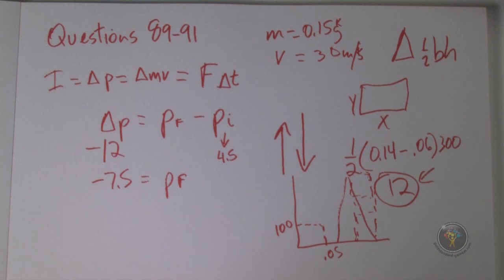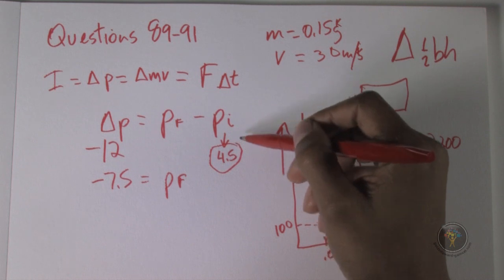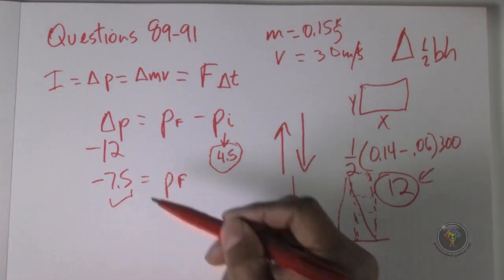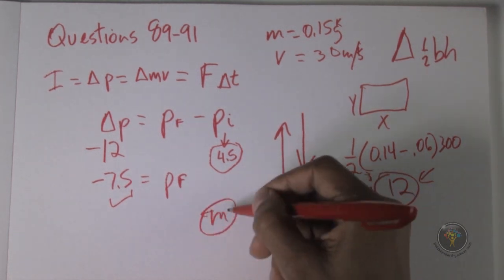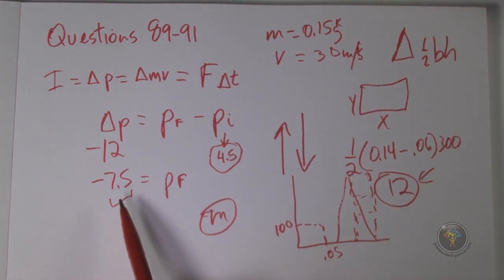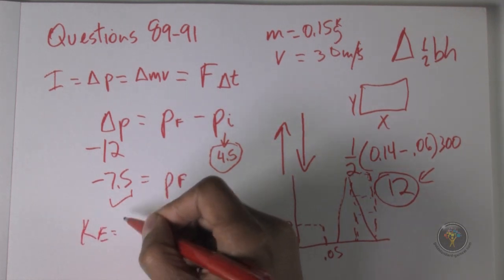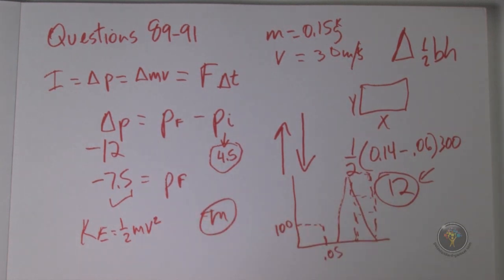We don't even need to calculate anything here. We know for sure the kinetic energy of the ball increases, because the original momentum was 4.5 but the magnitude of the final momentum is 7.5. Since the mass doesn't change and momentum equals mass times velocity, the final velocity is clearly higher. And since kinetic energy equals one half mv squared, a higher velocity means higher kinetic energy.